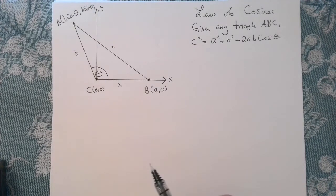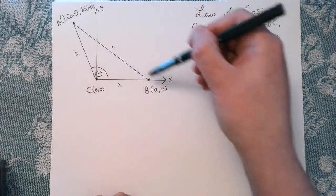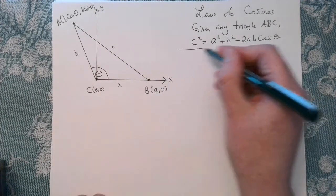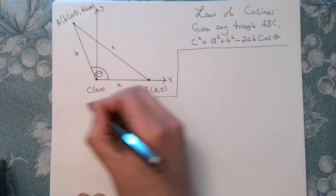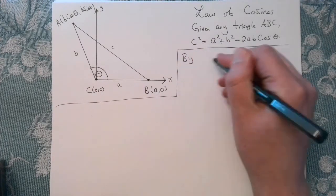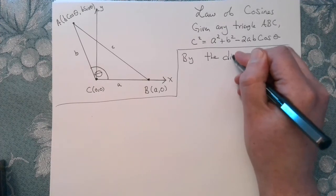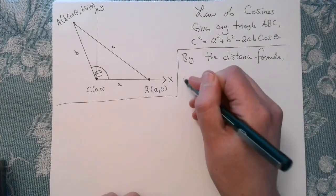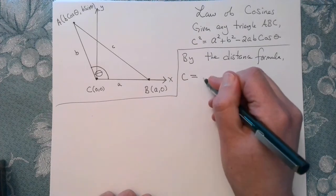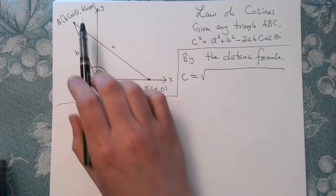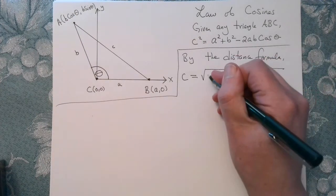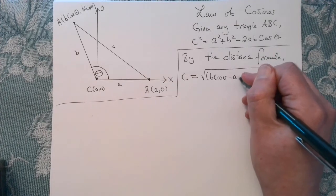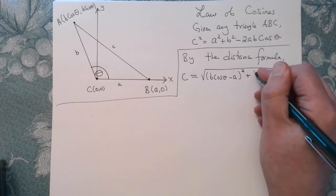So what I want to do now is use the distance formula to measure the length of C. So by the distance formula, we have the following. The length of C is equal to the square root. We need the difference in the x components here. So this will be B cosine of theta minus A quantity squared